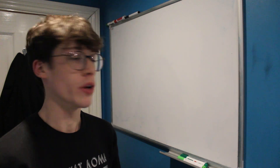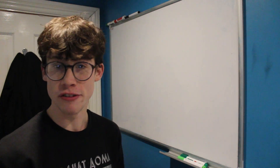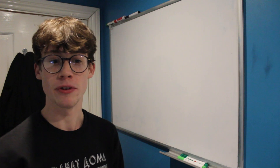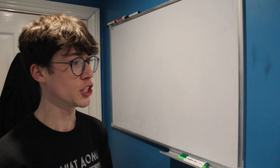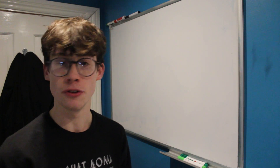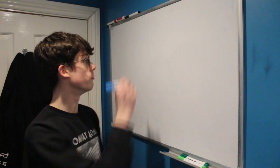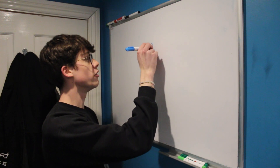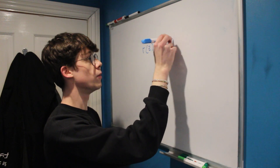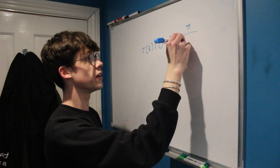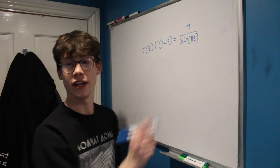Hello everyone, welcome back. This is my second video following on from talking about the Weierstrass product of the gamma function, and now we're going to be using it to derive Euler's reflection formula, which states that gamma of z multiplied by gamma of 1 minus z equals pi over sine pi of z.